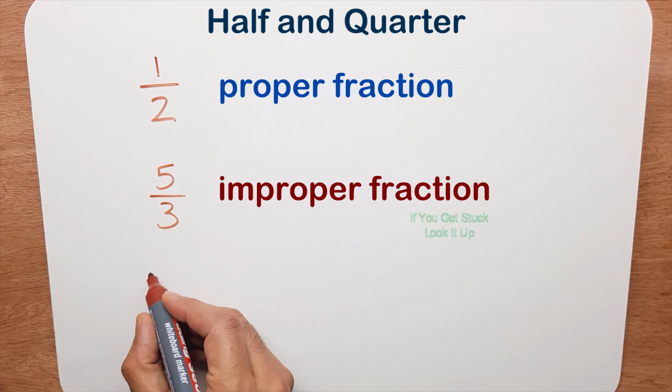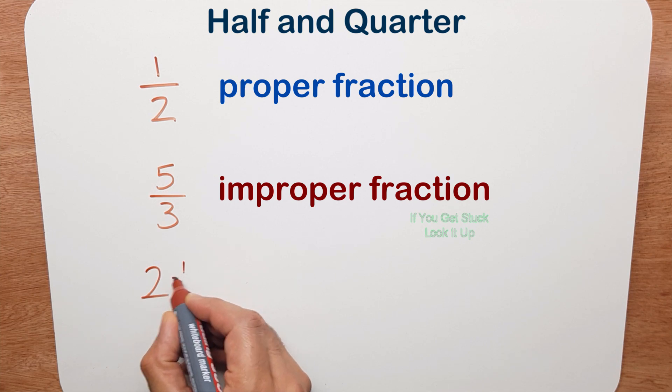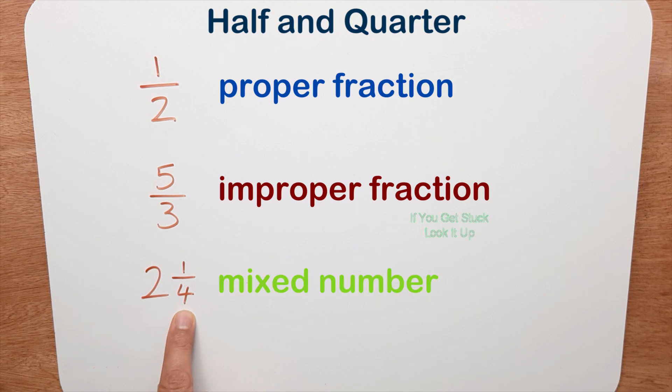And finally, we've done this before. Two and a quarter, you have a whole part and a fraction part. And if you have this, this is called a mixed number.